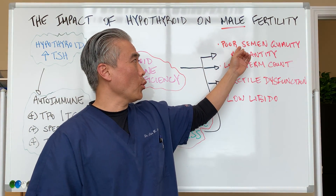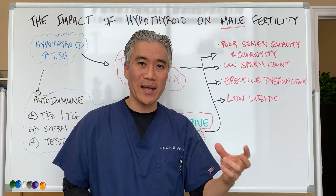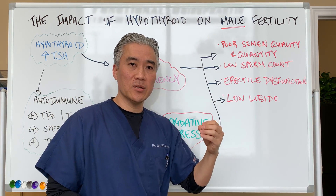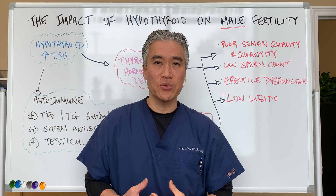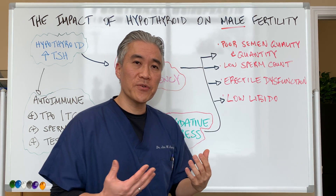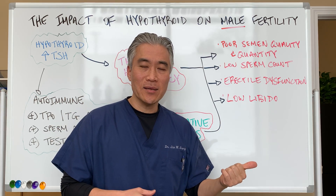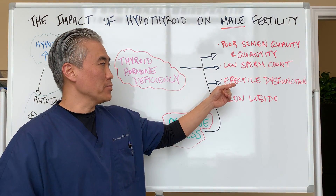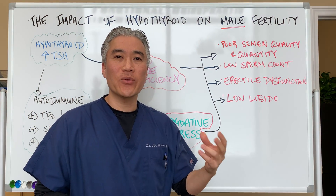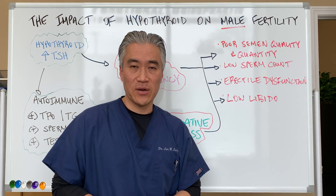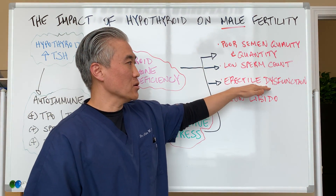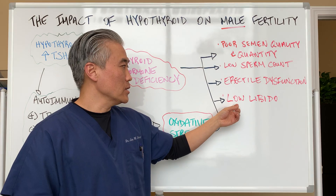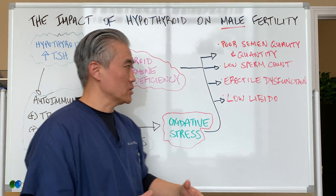When we look at it, we have poor semen quality and quantity, low sperm count, and erectile dysfunction. Erectile dysfunction can be due to nitric oxide issues where circulation is poor. There are three forms of nitric oxide — one is called nNOS. We want to be able to increase neuronal and endothelial nitric oxide for erectile dysfunction, so this can be a result of a nitric oxide imbalance or deficiency. You can also have low libido, just because you have low thyroid hormones.